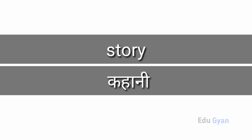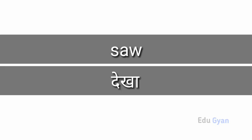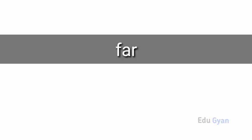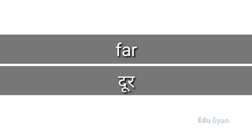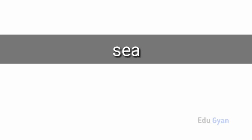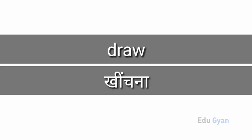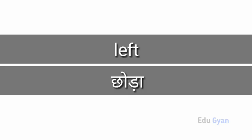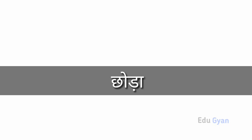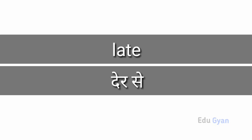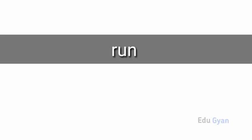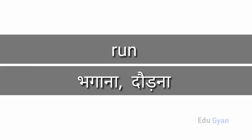Might means ho saktahay. Story means kahani. So means dekha. Far means dur. See means samudra. Draw means heechna, also utaharna. Left means chhoda. Late means derse. Run means bhaagana.